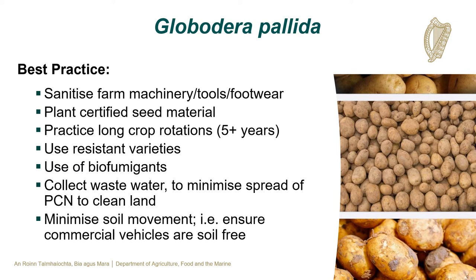Best practice to prevent the introduction and spread of Globodera palida includes the sanitation of farm machinery, tools and footwear, the planting of certified seed material, the practice of long crop rotations of five or more years, the use of resistant varieties and cultivars, the use and application of biofumigants, the collection of wastewater to minimise the spread of PCN to clean land, and minimising soil movement and ensuring that commercial vehicles are free of soil.